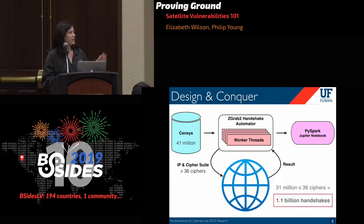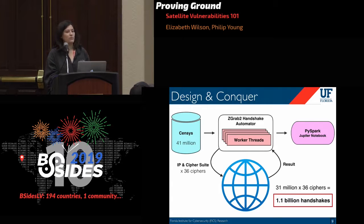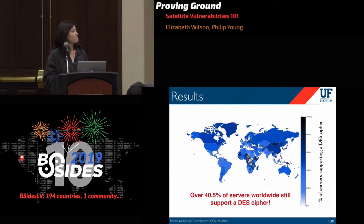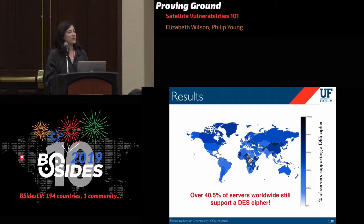36 ciphers times 31 million IP addresses that we were able to query equals 1.1 billion handshakes, over a period of about six months. What did we find? Over 40% of servers worldwide still accept some form of DES cipher.